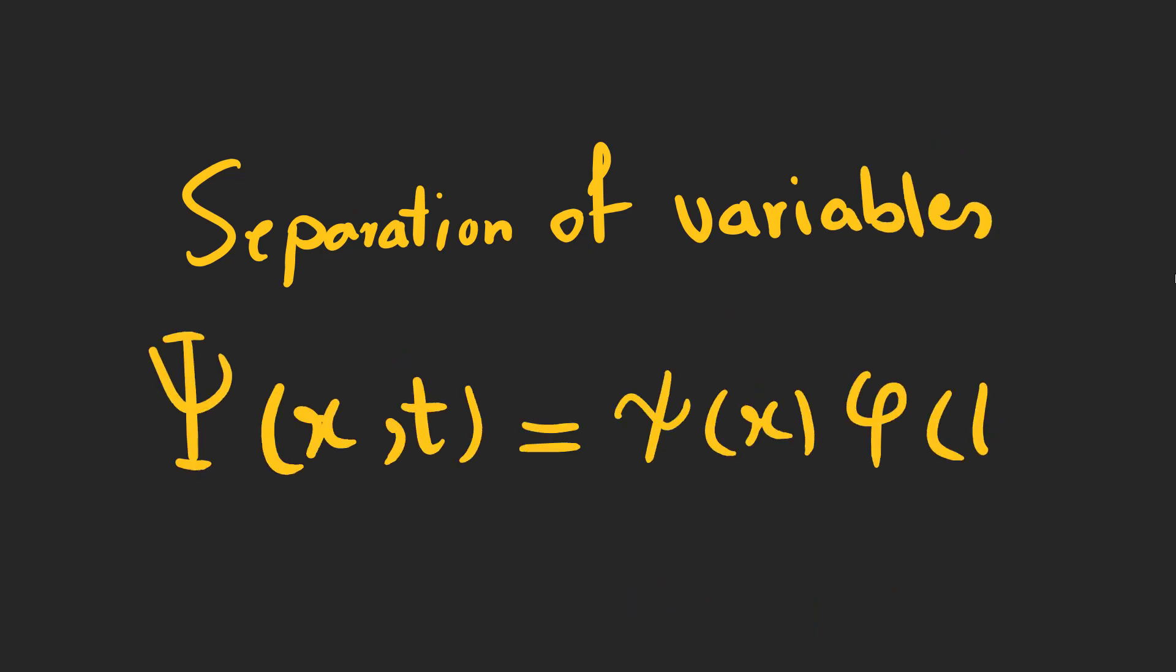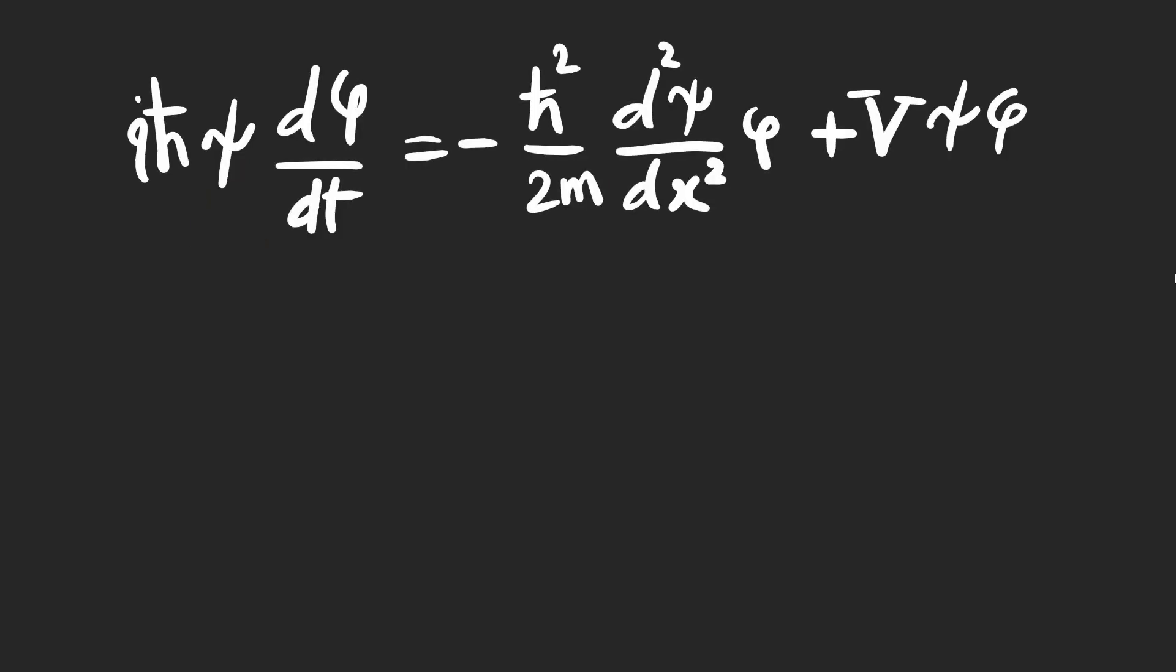We just focus on solutions which are products of a function of x and a function of t. So the Schrödinger equation becomes like this. Because the lowercase psi is just a function of x and phi is just a function of t.